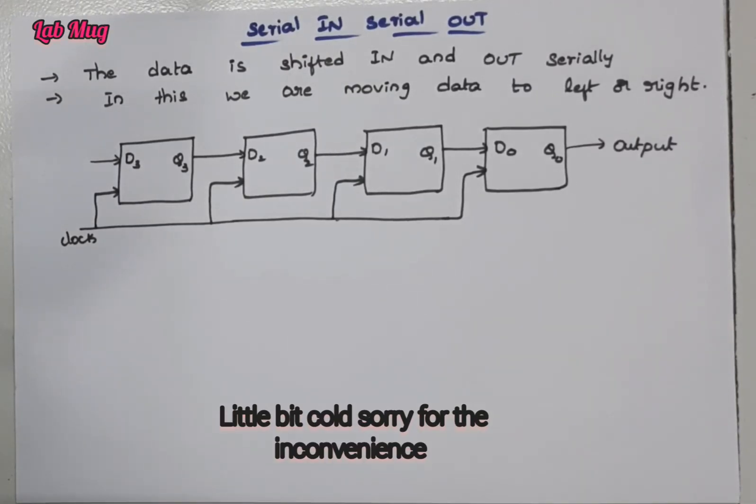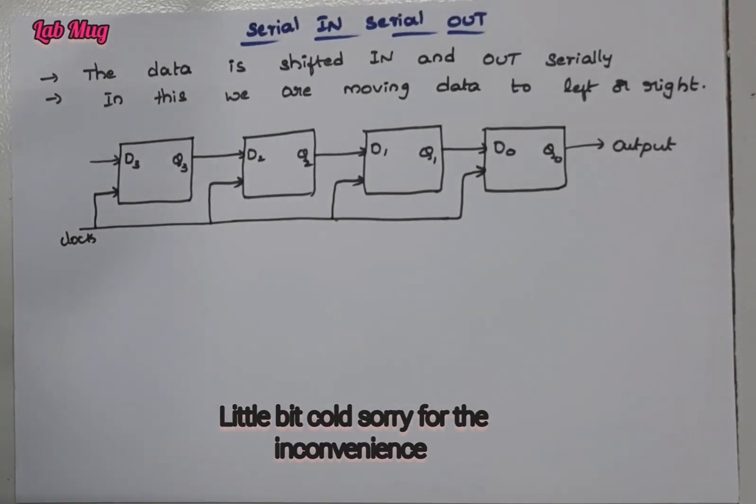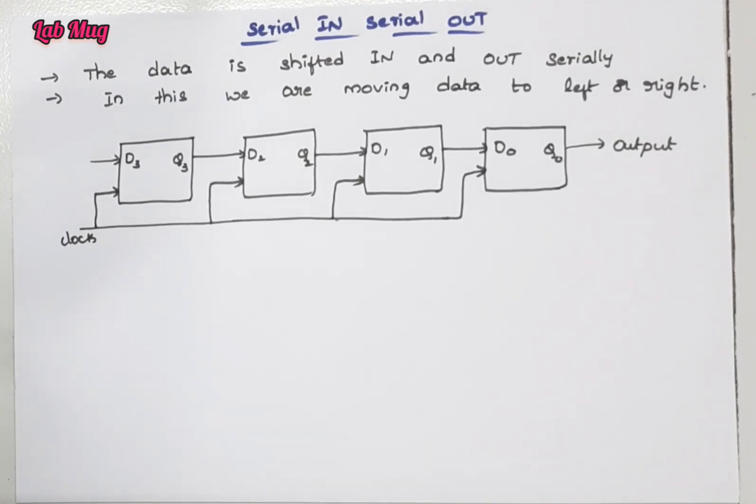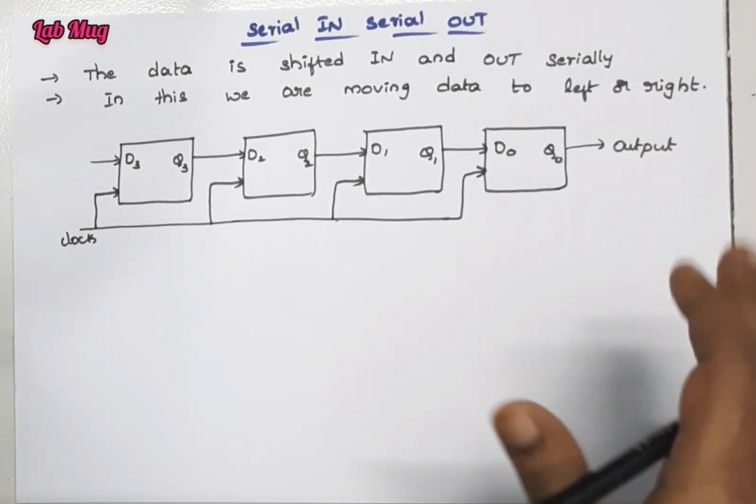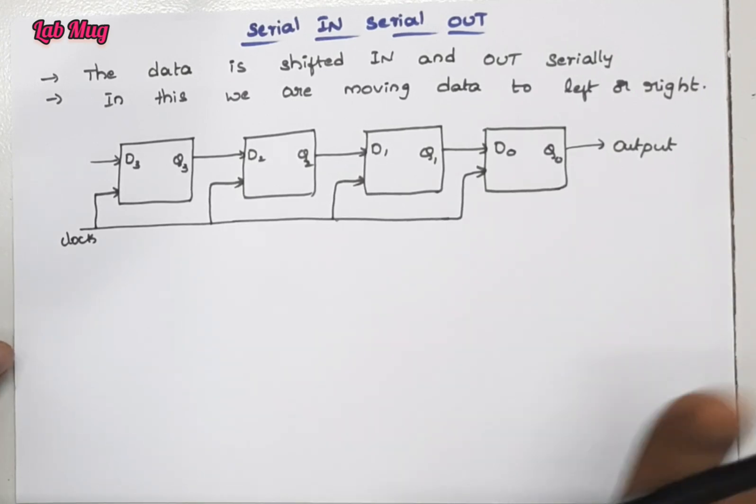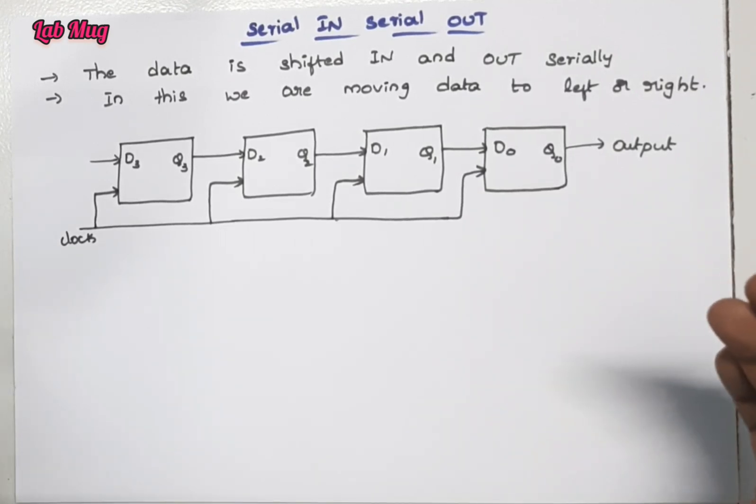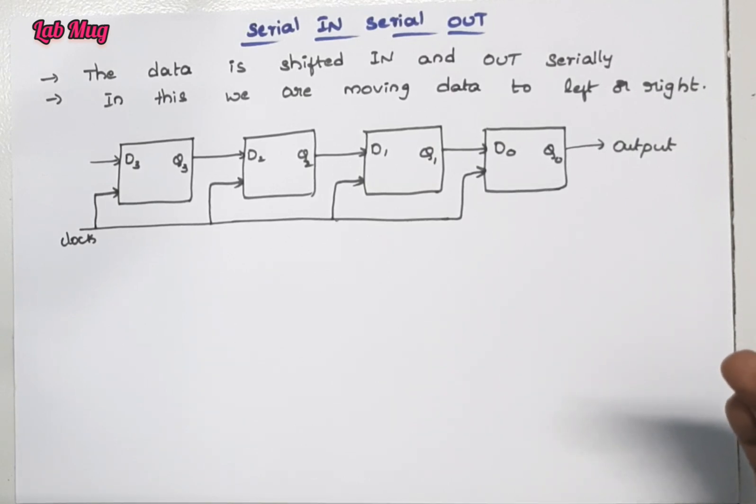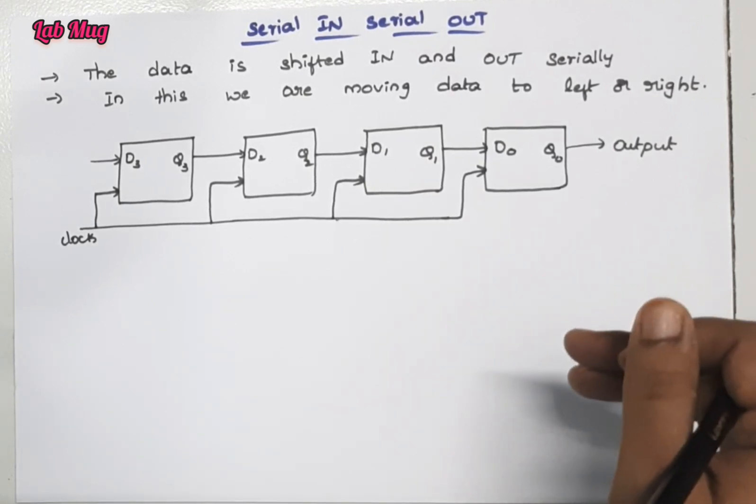Hi everyone, in the previous class we discussed what shift registers are and what are the types of shift registers. Different types include serial in serial out, serial in parallel out, parallel in serial out, parallel in parallel out, bidirectional, and universal shift registers.